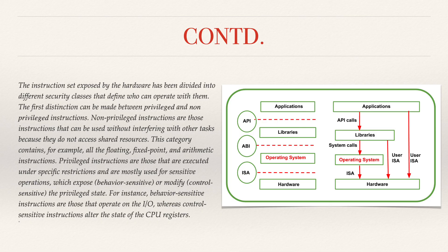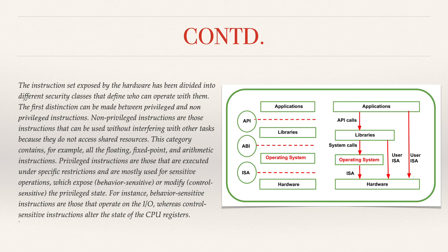The instruction set exposed by the hardware is divided into different security classes that define who can operate with them. The first distinction is between privileged and non-privileged instructions. Non-privileged instructions can be used without interfering with other tasks because they do not access shared resources; this category includes all floating-point, fixed-point, and arithmetic instructions. Privileged instructions are executed under specific restrictions and are mostly used for sensitive operations that expose or modify the privileged state. Behavior-sensitive instructions operate on input and output, whereas control-sensitive instructions alter the state of the CPU registers.